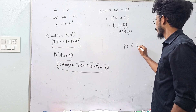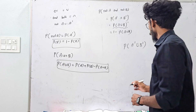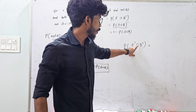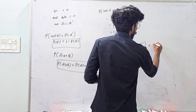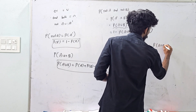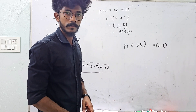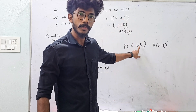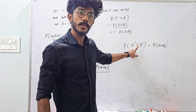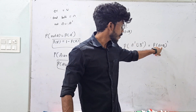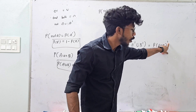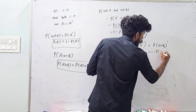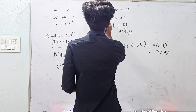Probability of A whole complement: the whole complement of A intersection B gives us A complement union B complement. Similarly, probability of A intersection B whole complement equals 1 minus P(A intersection B).